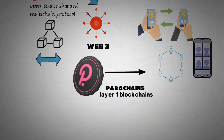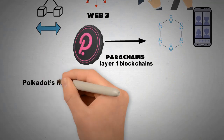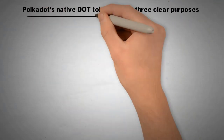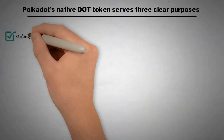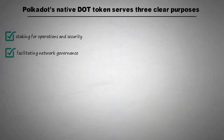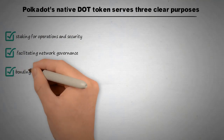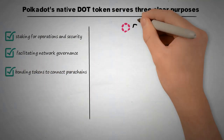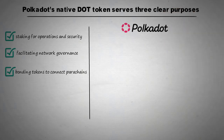Polkadot's native DOT token serves three clear purposes: staking for operations and security, facilitating network governance, and bonding tokens to connect parachains. Polkadot has four core components.